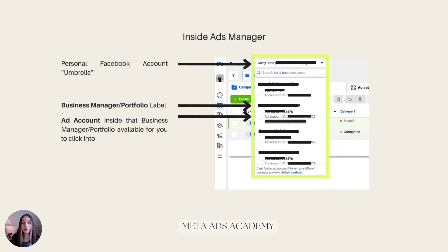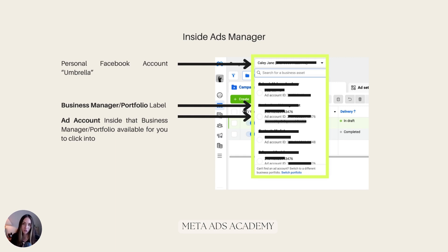If you navigate to a different ad account this way and click into it, it's going to automatically switch you into the Business Manager account where that ad account is housed. There's nothing wrong with navigating like this. If you are running ads for yourself and only yourself, it's ideal to just have one Business Manager account with all your assets there. If you're running ads for clients, I prefer to add all their assets to my own Business Manager so I can quickly toggle between ad accounts. Or there's the Quick Start method — having them add you into their Business Manager account, granting yourself access to the assets, and starting sooner, though you'll have to toggle between different Business Manager accounts.